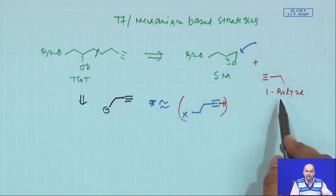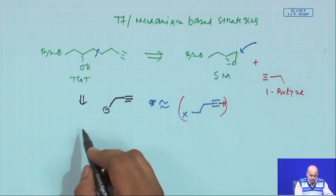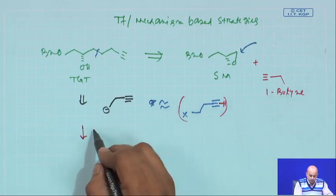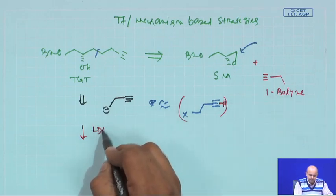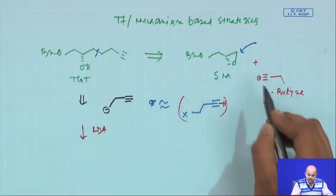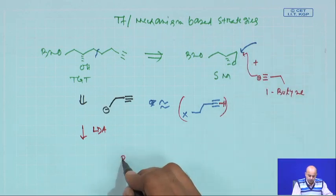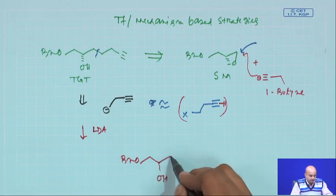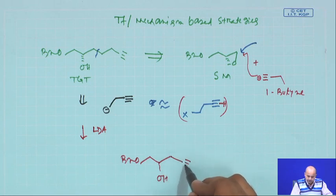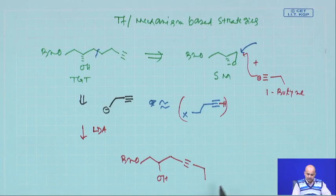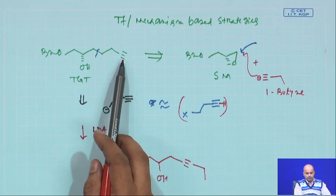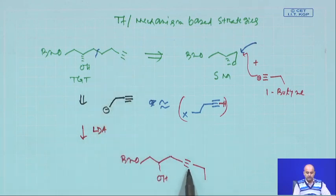If 1-butyne is given, how can it give you the target molecule? First, react 1-butyne with a base like LDA, generating a carbanion. This minus attacks the epoxide, giving you OH-CH2 with the alkyne attached. So instead of a terminal acetylene, you get an internal acetylene as a product. Then you are in doubt — your target molecule has a terminal acetylene, but you have generated an internal acetylene.